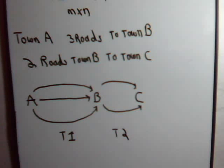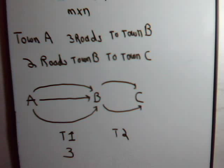And the number of ways that we can perform task T1, of course, is three. The number of ways that we can perform task T2 is two.